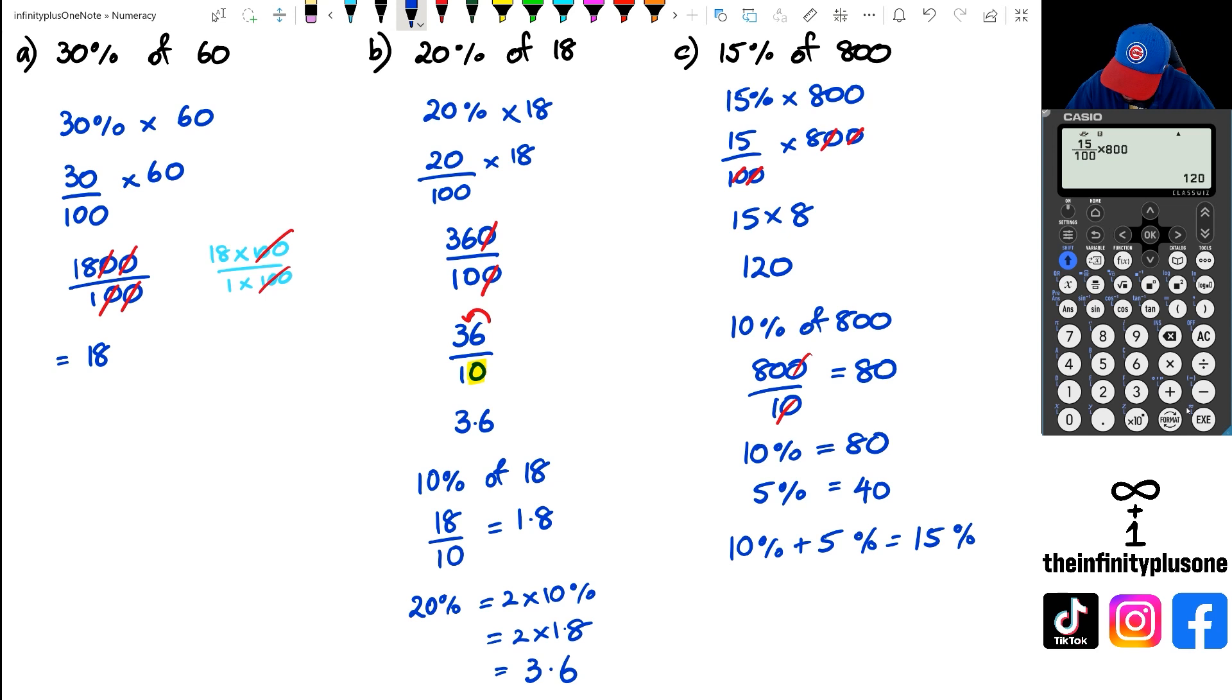We can say 10% plus 5% equals 15%, so then we can say 80 plus 40 equals 120. As you can see, there are multiple ways to do these types of questions without a calculator. I mean you could convert your percentage to a fraction or a decimal. There's just so many different ways of doing this question.